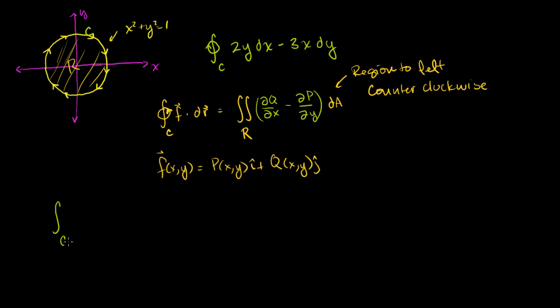So in our example, we're going to have the integral of c in the clockwise direction of f dot dr. This is going to be equal to the double integral over the region, and we could just swap these two, the partial of p with respect to y minus the partial of q with respect to x, dA.